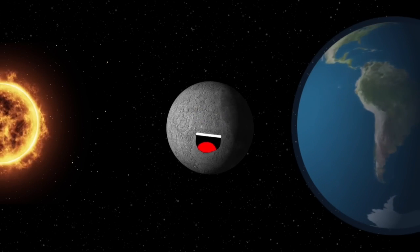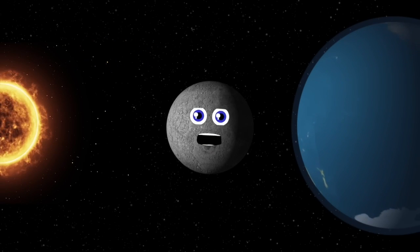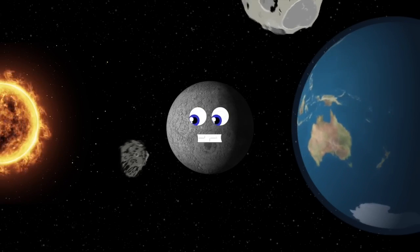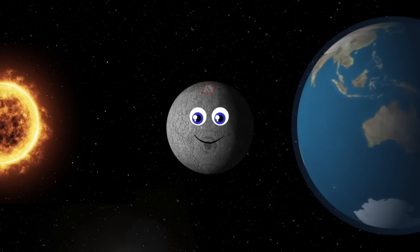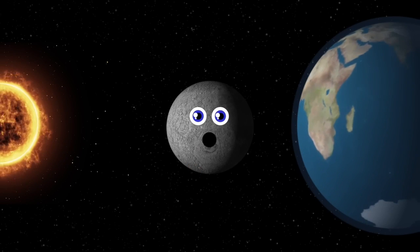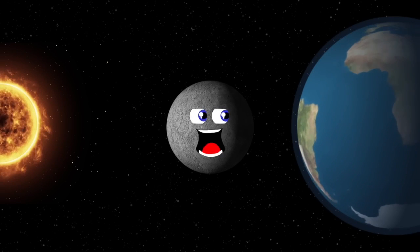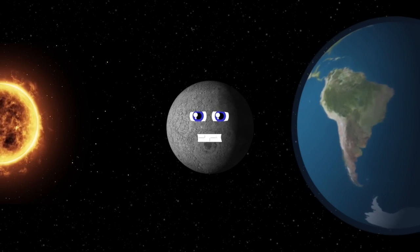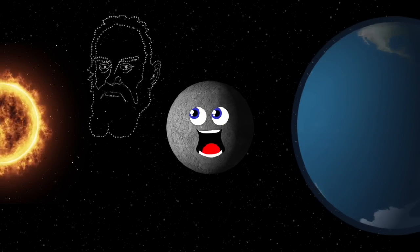It's believed I was created 4.5 billion years ago, when a Mars-sized body collided with Earth and their debris formed me. Meteors, asteroids, and comets struck my surface for a billion years, due to the fact that they don't burn up in my thin atmosphere. A moon is a natural satellite — one that orbits a single planet, which orbits a star. Scientific observations were first made in 1610 by Galileo Galilei, the Italian astronomer.